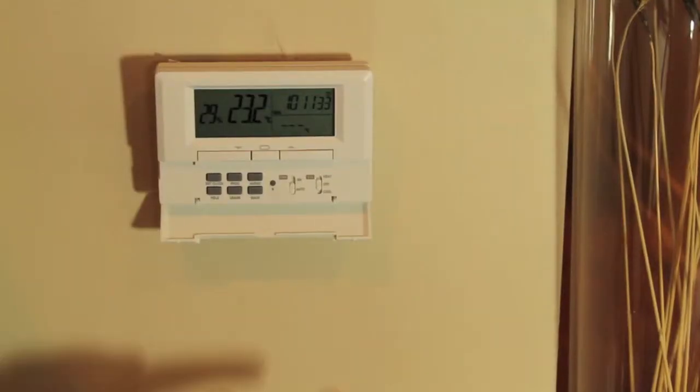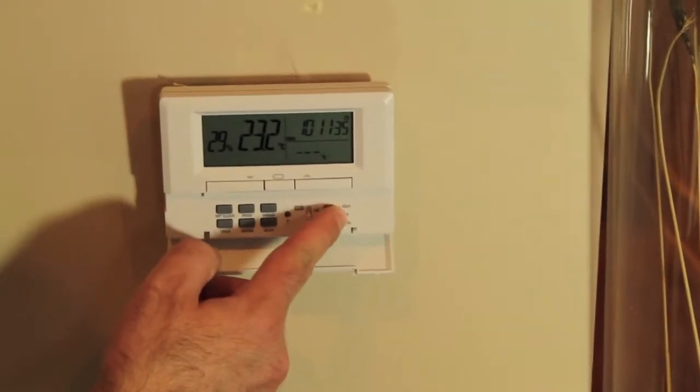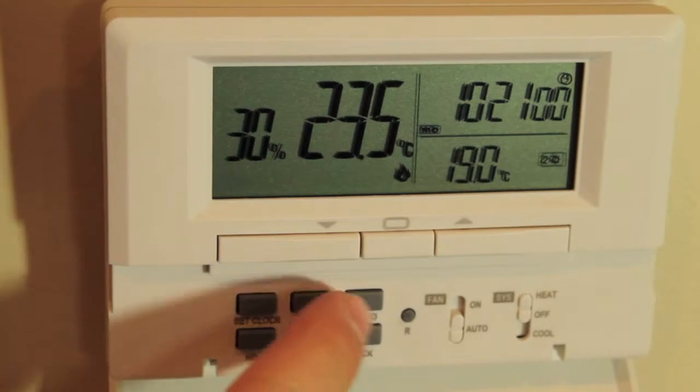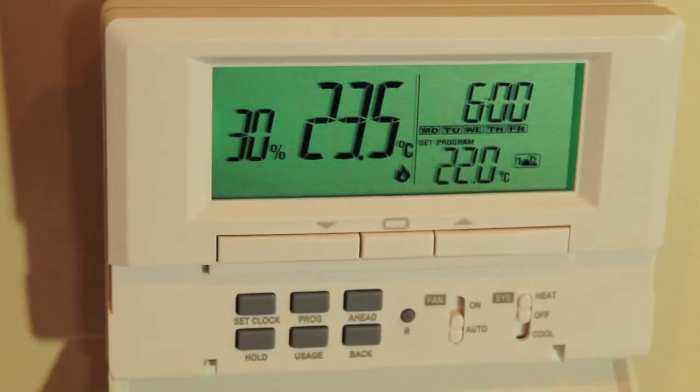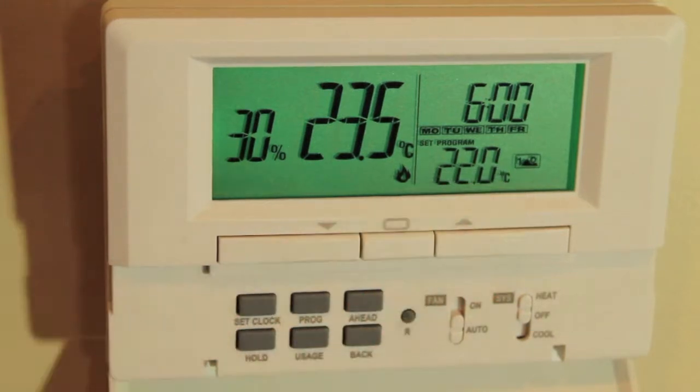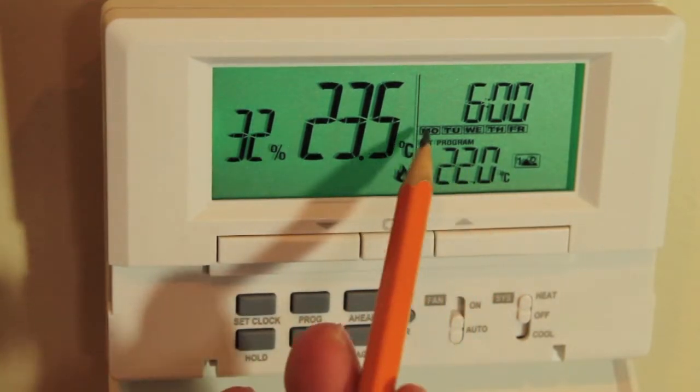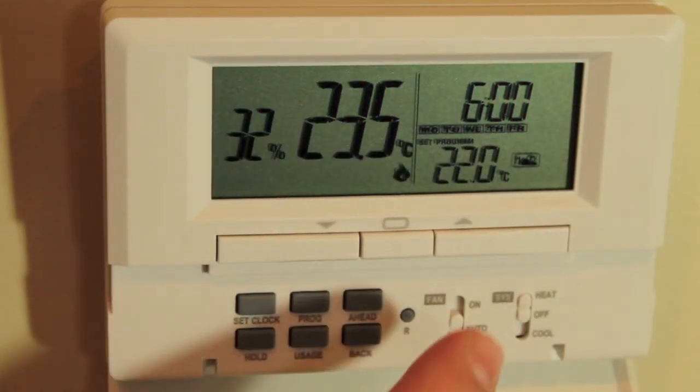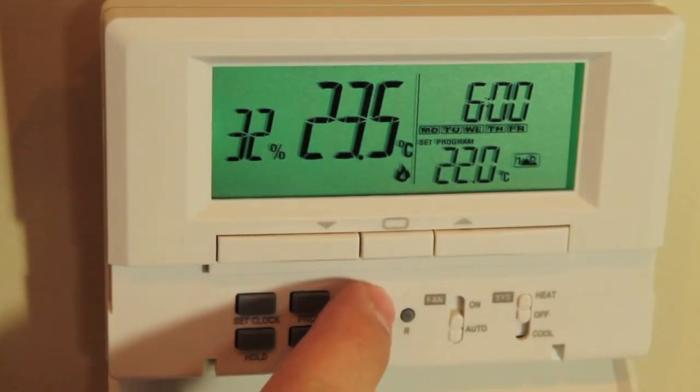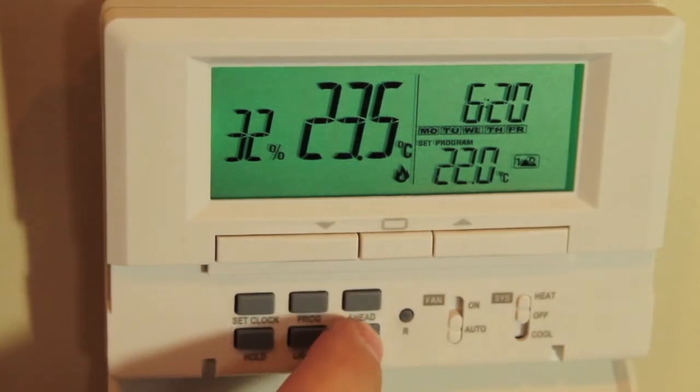The same methods are used when entering a heating or cooling program. For this demonstration, we'll enter a heating program. First, slide the system switch to heat. A heating symbol will appear. Push the program button once and the word set along with the symbol for program one will appear on the screen. You'll also see all the symbols for the days of the week. You can adjust the temperature by pressing the up or down arrow buttons and the time by pressing the ahead or back buttons.